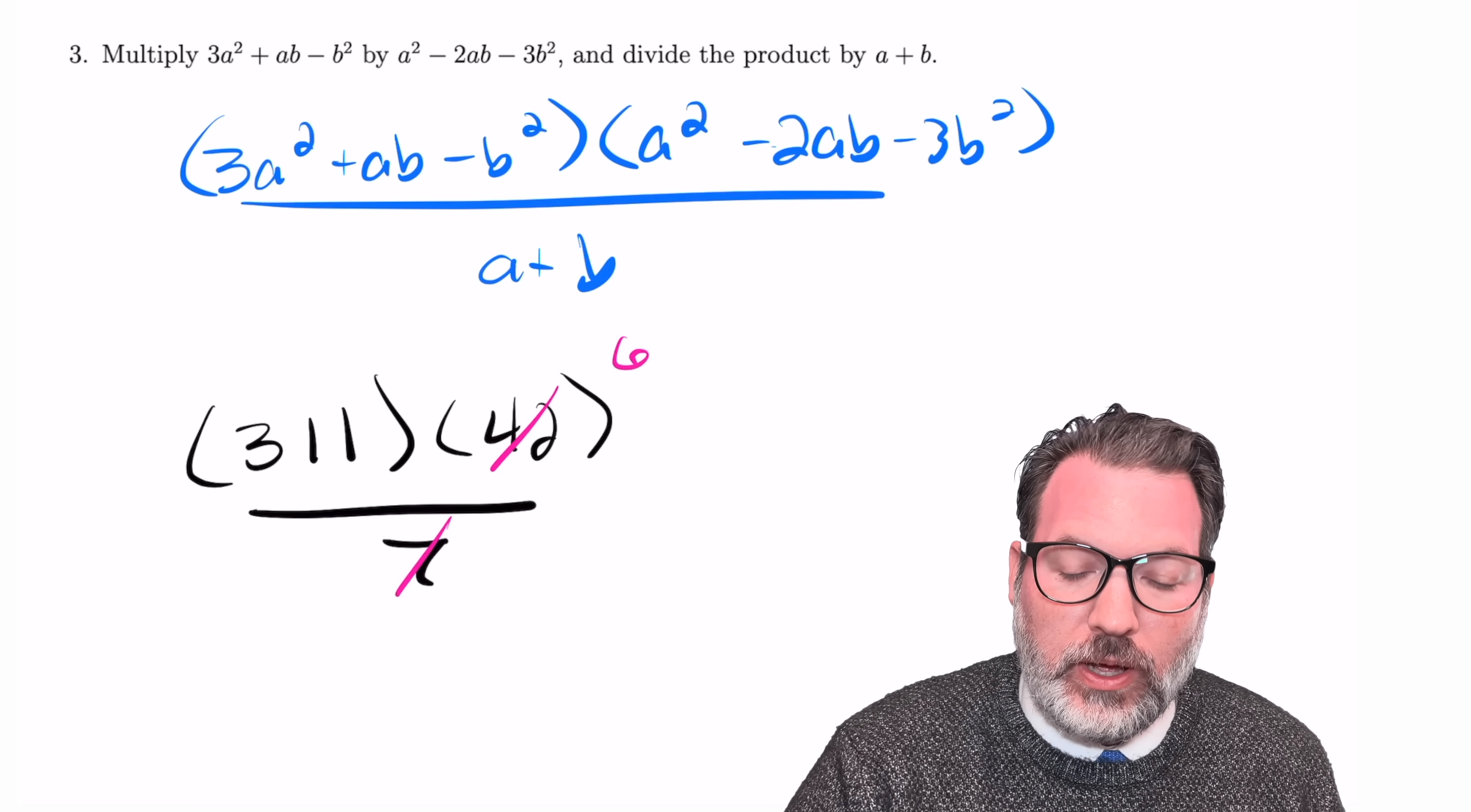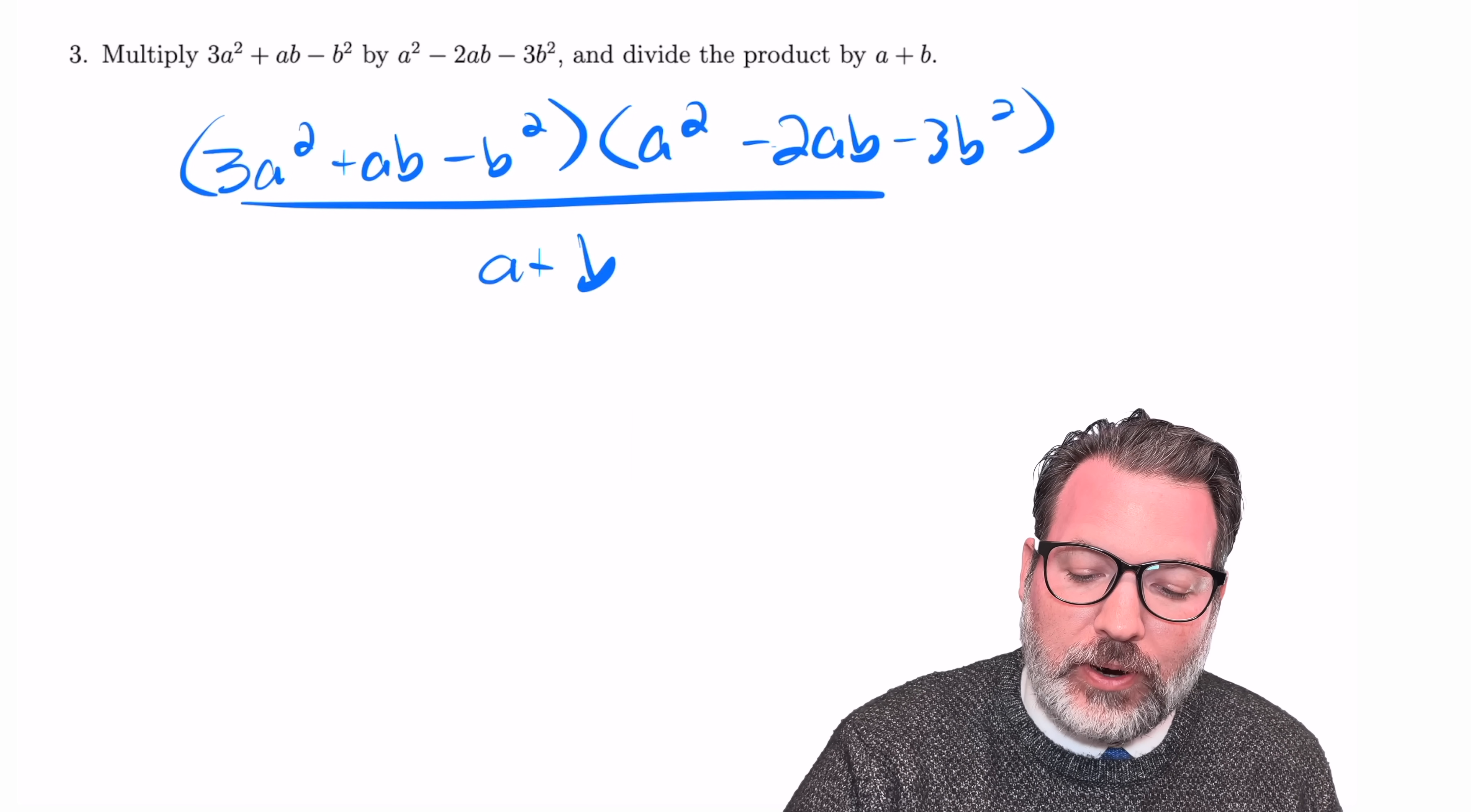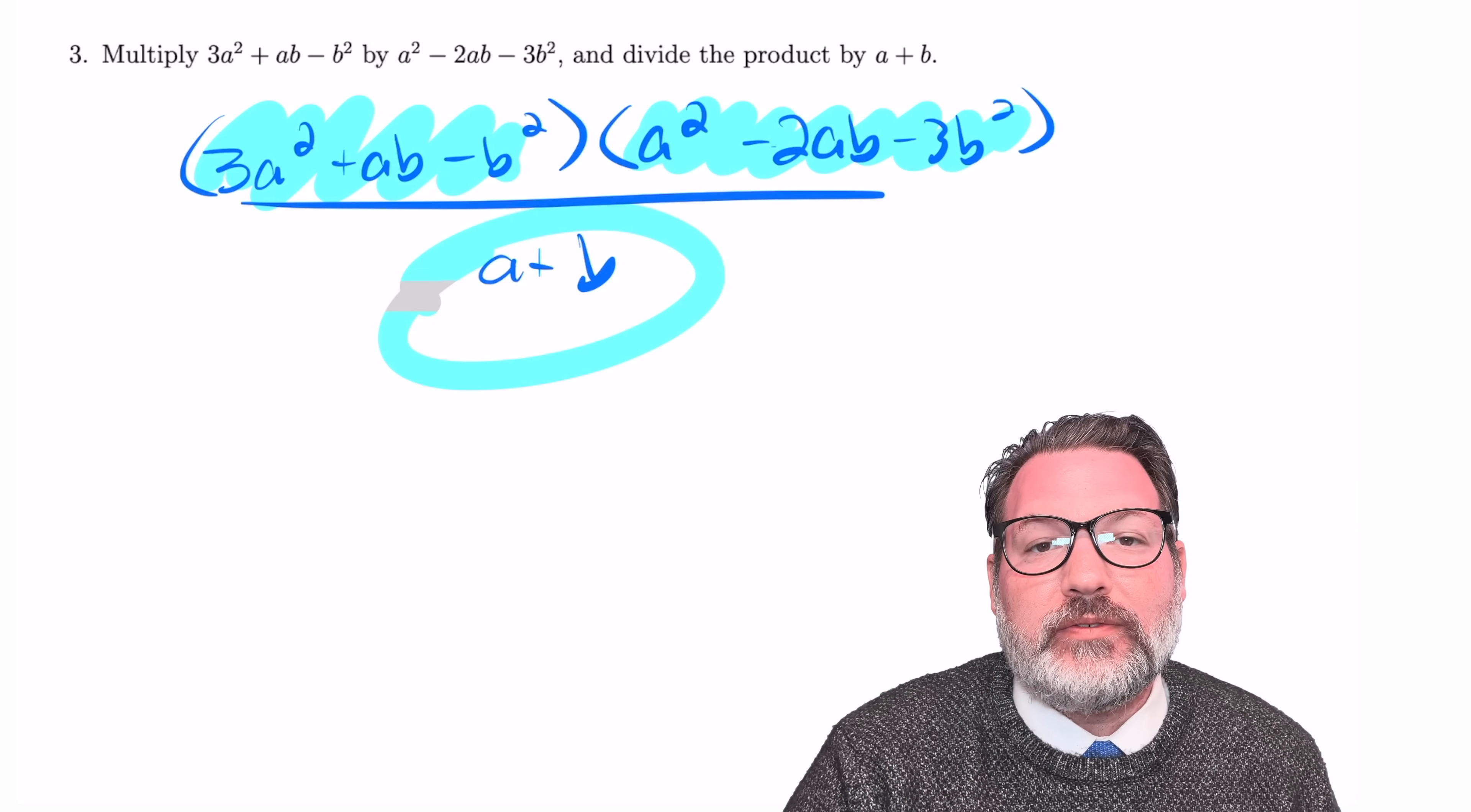7 goes into 42 six times, I can perform that division first and simplify my multiplication considerably. 311 times 6, well, that's a lot easier to compute than what they originally asked me to do. The same thing is going on on this MIT problem. We are going to attempt to factor either one of these two original trinomials they wanted us to multiply together and see if maybe we get lucky and we can divide out that a plus b earlier in the process and save ourselves a little bit of work.